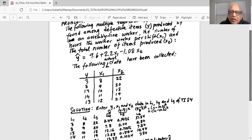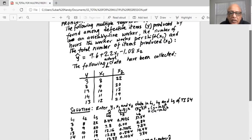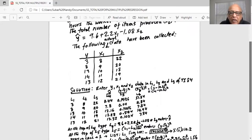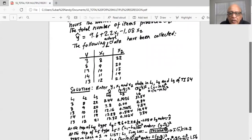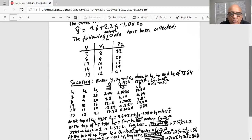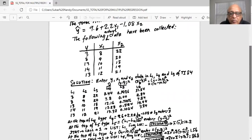Enter y in L1 and x1 and x2 in L2 and L3 of TI-84. Now in L4, go to the top line in L4 and enter the equation L4 equals 9.6 plus 2.2 multiplied by L2 minus 1.08 multiplied by L3. Remember L2 is second 2 and L3 is second 3, and then enter. So basically L4 is filled up with y hat or predicted y.